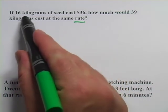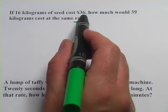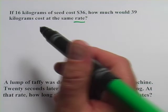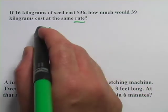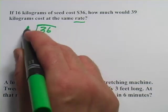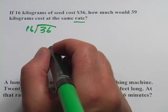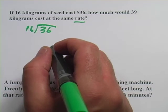So if 16 kilograms of seed cost $36, what we want to do is find out what would one kilogram cost. That would be our unit price. To do that, I'm going to take the $36 and divide it by the number of kilograms that we bought, and this should give us the cost per one kilogram.